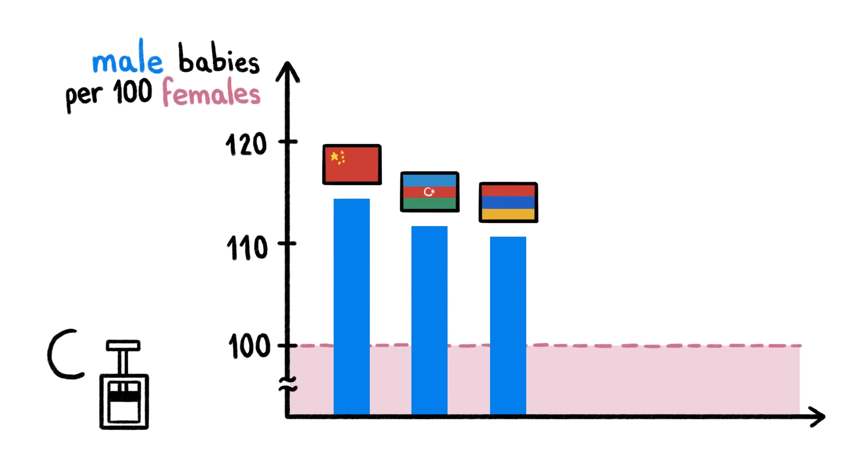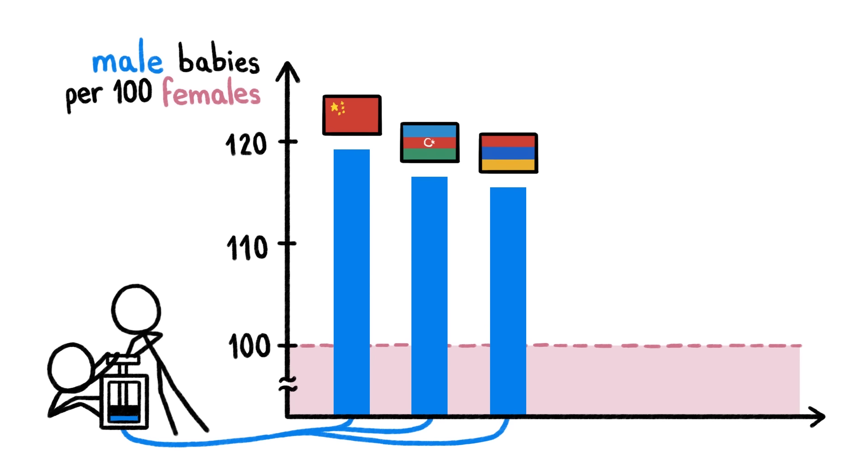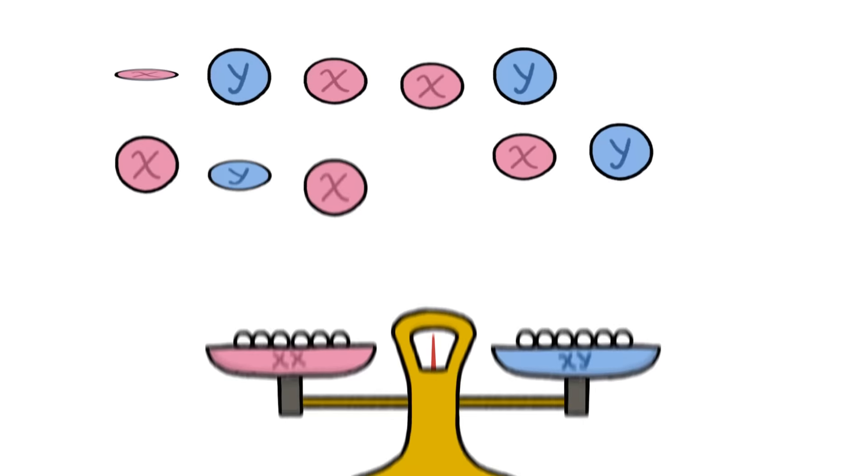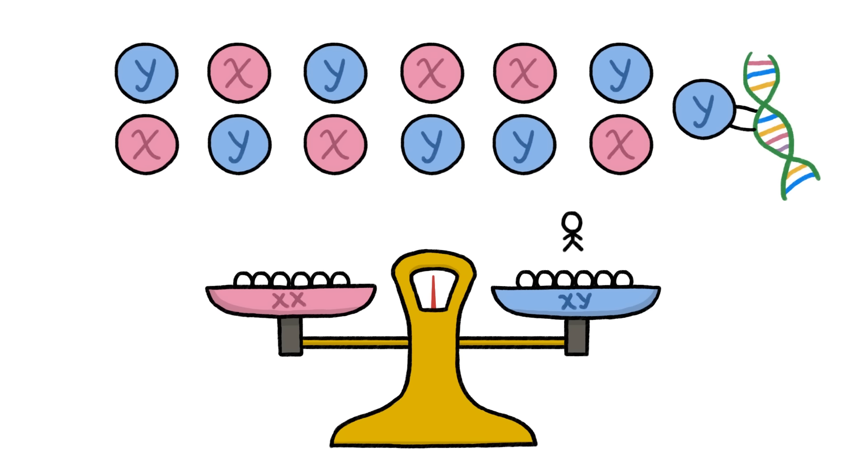There are some countries where human meddling stacks the odds even higher in favor of boys, but that doesn't explain the fixed odds everywhere else. The intrinsic boy-girl ratio is rigged by Mother Nature.